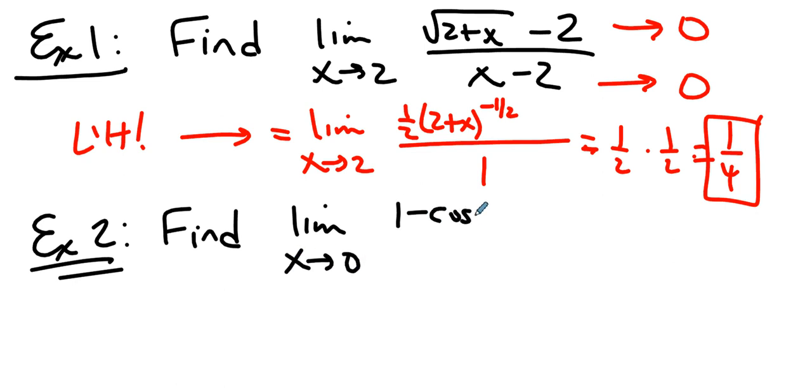What about this? 1 minus cosine x over x squared as x approaches 0. Well, what is that? Well, the numerator approaches 0 and the denominator approaches 0.